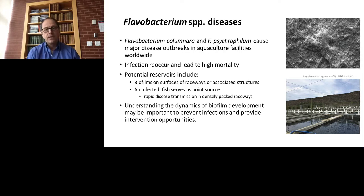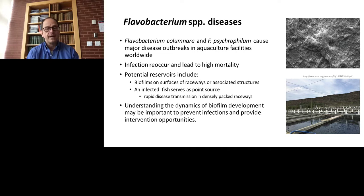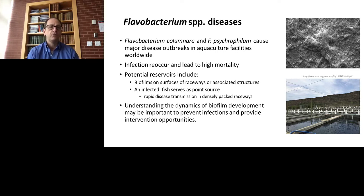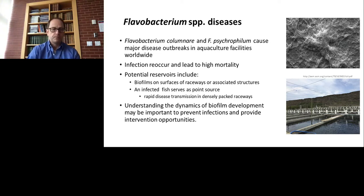In some locations like the one that we visit, these infections reoccur on an annual basis and they lead to very high mortality. So it is really important to figure out where these pathogens are coming from, where they are hiding, and other ways that we can prevent these recurring infections without having to resort to adding antibiotics. The potential reservoirs include biofilms that form on surfaces, either in the pipes or in the raceways themselves. They can also result from infected fish entering raceways and spreading rapidly to other fish in these dense environments.